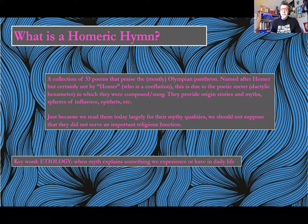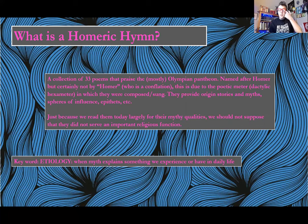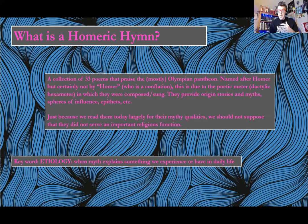Let's go over just the basics of what is a Homeric Hymn. It's a collection of 33 poems that mostly praise the Olympian pantheon. We spent some time with Hesiod's Theogony and Works and Days, and Theogony in particular talked about the rise of Zeus and the other Olympians to a hegemonic position on Mount Olympus. Those gods then gain a lot of different hymns, and it's really interesting to compare the way in which those gods are presented in the hymns versus in the Theogony and the Works and Days.